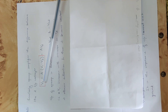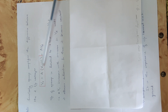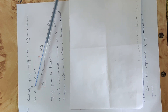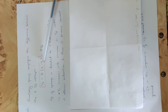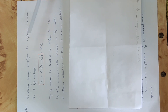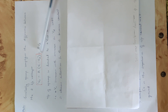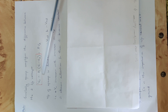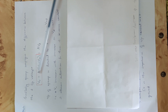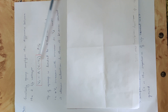For the OPAMP, the output voltage equation is VO equals A into (V1 minus V2). The OPAMP amplifies the difference between two input voltages. This is the fundamental differential amplifier property of the OPAMP.